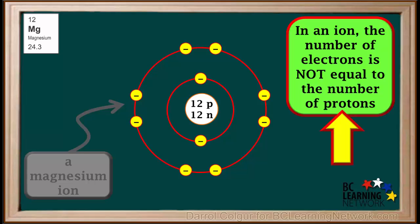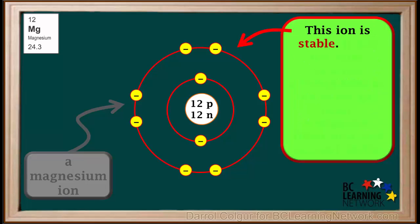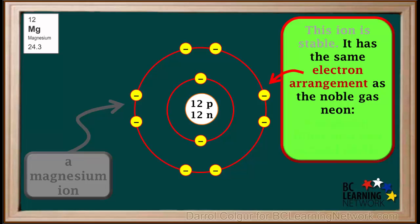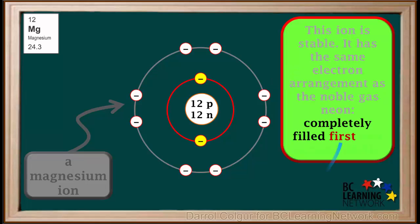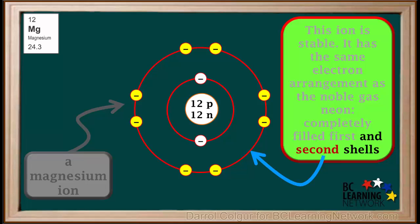In an ion, the number of electrons is not equal to the number of protons. We have 12 protons but only 10 electrons here, so this is an ion. This ion is stable because it has 10 electrons — it has the same electron arrangement as the noble gas neon, with completely filled first and second shells.